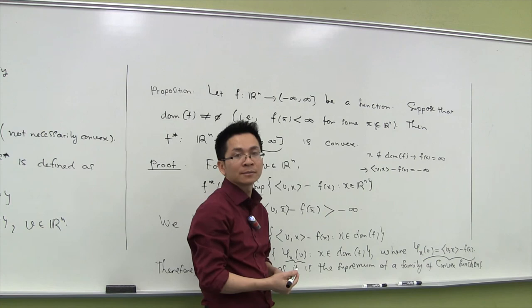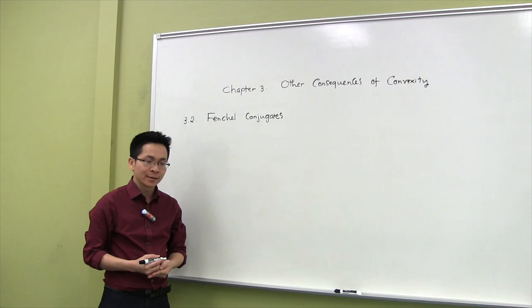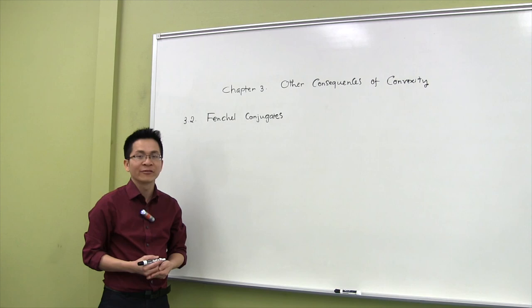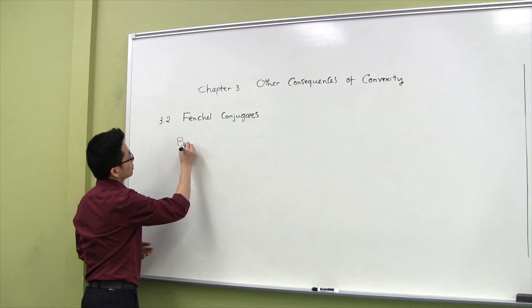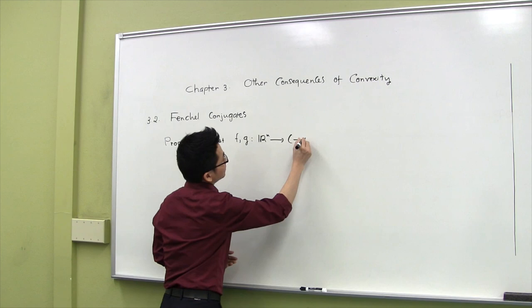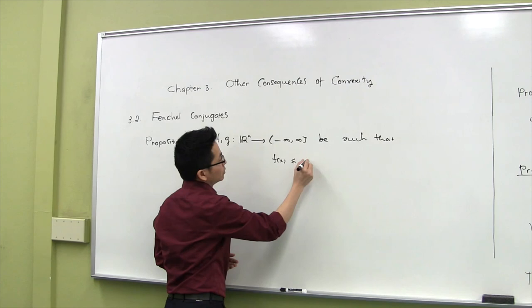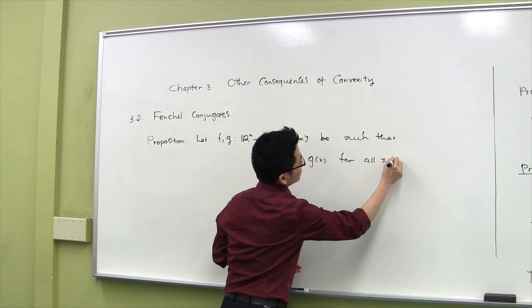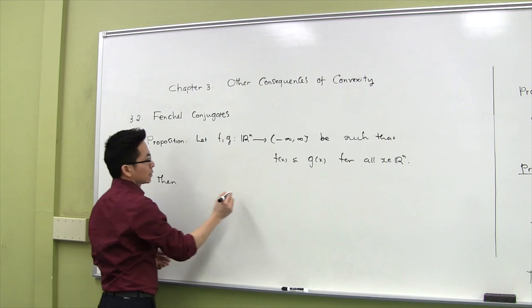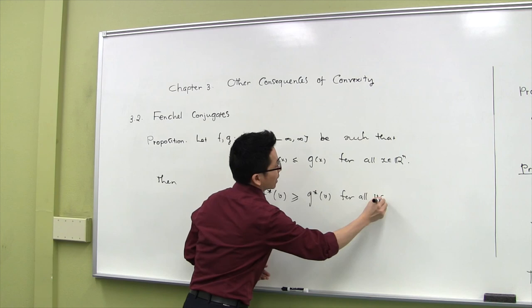Next is a very simple property. It says that if f and g are extended real value functions and f is less than or equal to g, then the Fenchel conjugate of f is greater than or equal to the Fenchel conjugate of g. Let f and g be functions defined on R^n such that f(x) is less than or equal to g(x) for all x in R^n. Then f*(v) is always greater than or equal to g*(v) for all v in R^n.